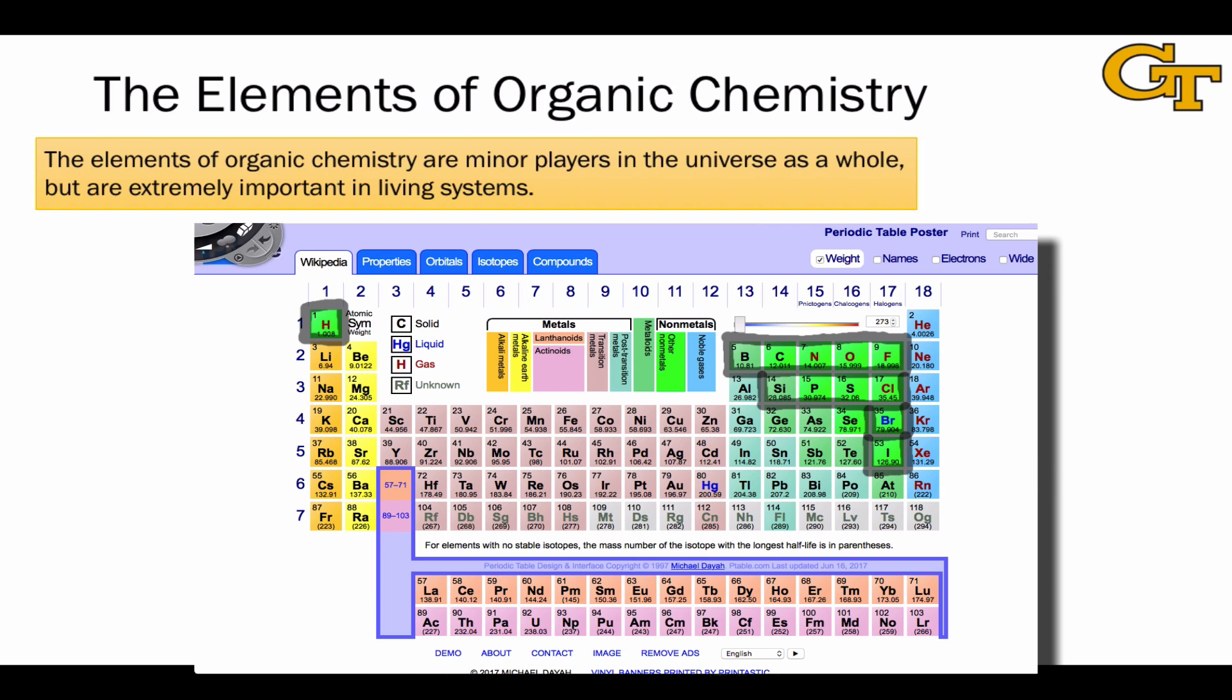These are elements that generally form covalent compounds, and in particular, thanks to the structural diversity of elements like carbon and nitrogen, which form a large number of bonds, the structural diversity of organic compounds is massive. Interestingly, despite this diversity, the abundance of the organic elements in the universe is actually quite small.